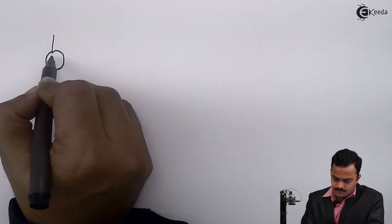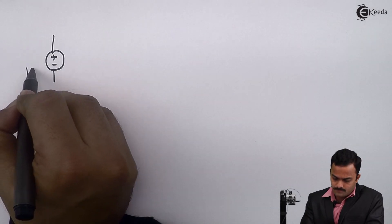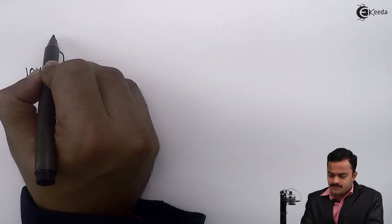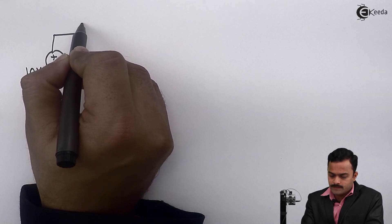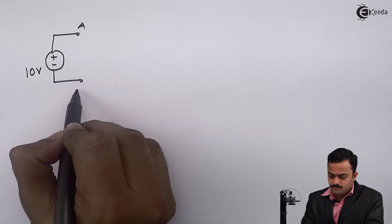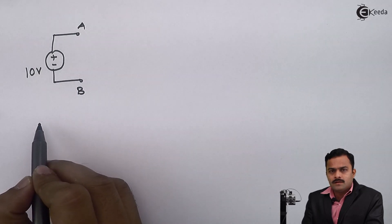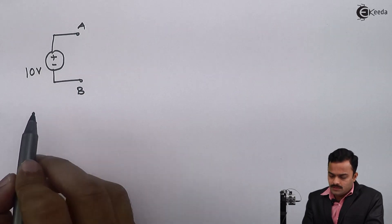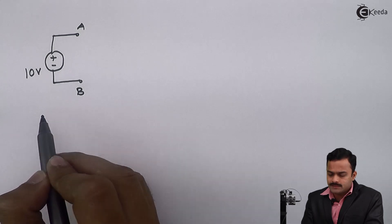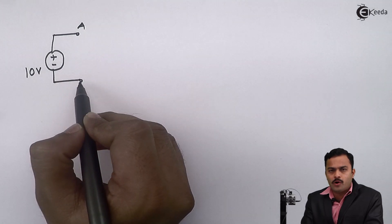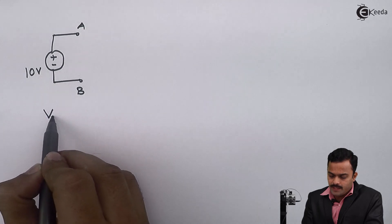Hello friends, in this video we are going to see some important points about the voltage source. Let me take one voltage source of 10 volts and I'll give the names A and B to these two points. Now suppose we have to find out what is the potential difference between points A and B, that means V_AB.